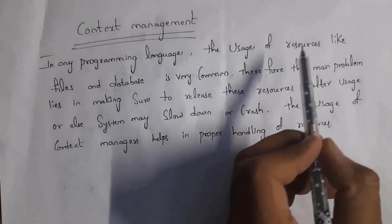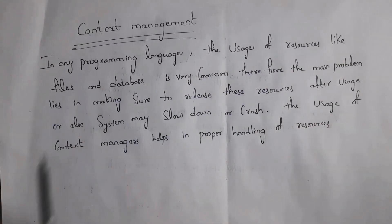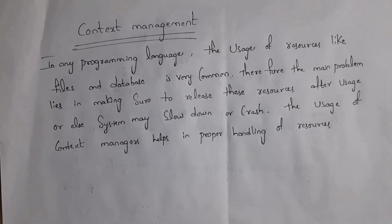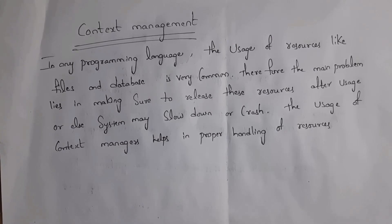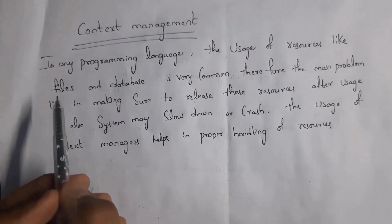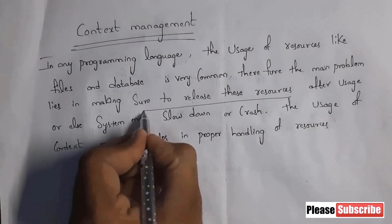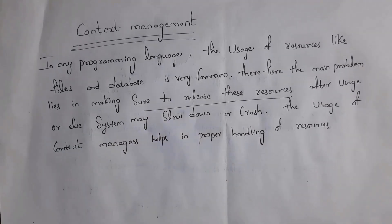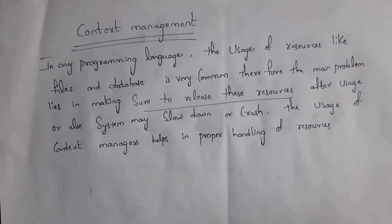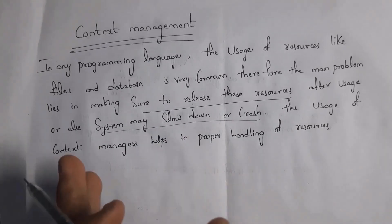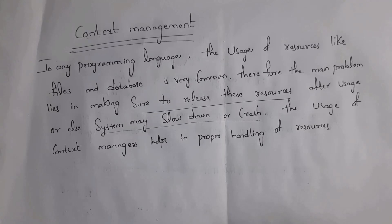Let's get started. First I will explain context management. In any programming language, the usage of resources like files and databases is very common — for example, even in C programming we use files. The main problem lies in making sure to release these resources after usage. For example, if I open a file, we definitely need to close that file. If you don't close it, your system may slow down or crash.